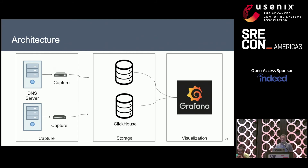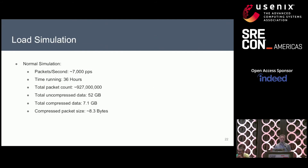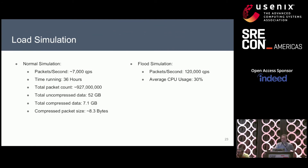To test this system, we did some load simulations. We ran a test at 7,000 packets per second for 36 hours, receiving approximately one billion packets and storing approximately 52 gigabytes of data, compressed down to 7.1 gigabytes, using approximately 8.3 bytes per packet, compared to the normal size of about 200 bytes. We also ran a simulated DDoS at 100 to 200 thousand packets per second, and ClickHouse was only using an average of 30% CPU — so it handled the DDoS very well.